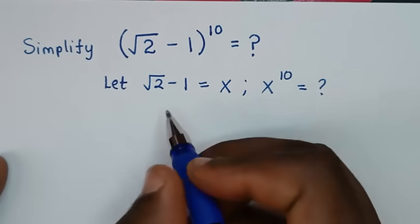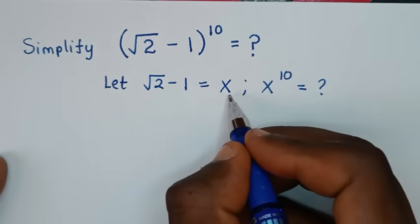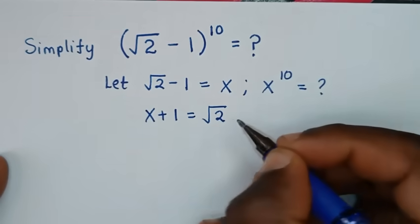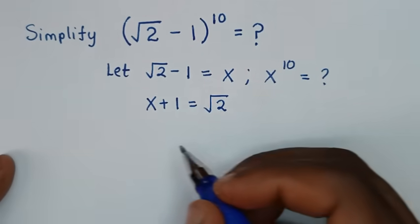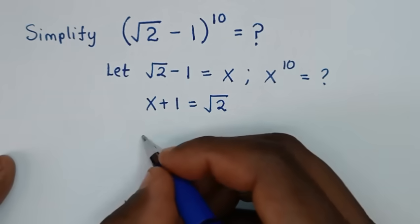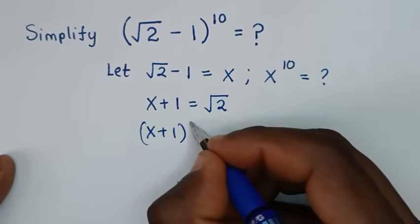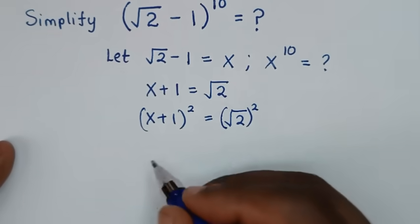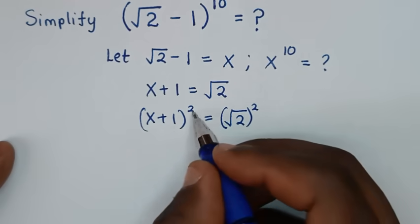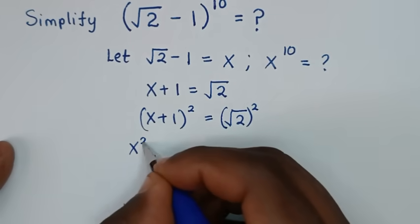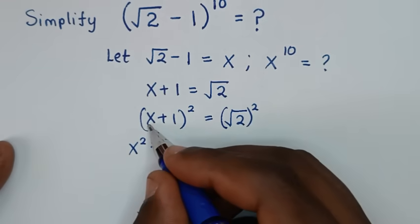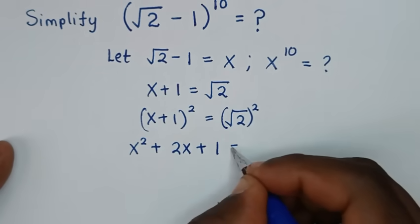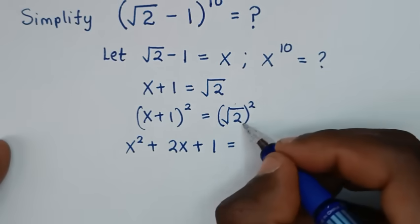In the next step we'll take the negative 1 to the other side, so it will be x plus 1. So x plus 1 is equal to square root of 2. Then to remove the square root we'll square both sides, so it will be x plus 1 squared equals square root of 2 squared. Expanding: x squared plus 2x plus 1 equals 2.